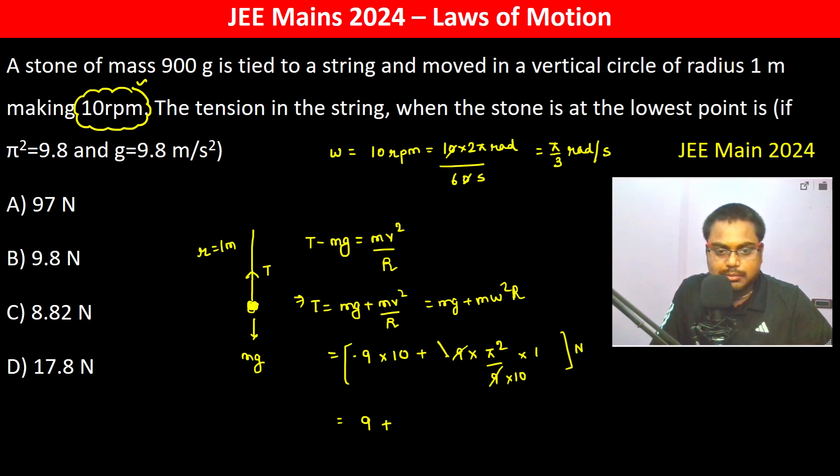g is taken as 9.8. So this is 0.9 into 9.8, this also becomes 9.8, so this is basically 0.9 plus 0.1 into 9.8 Newton which is 9.8 Newton. So therefore the answer is going to be B. Thank you.